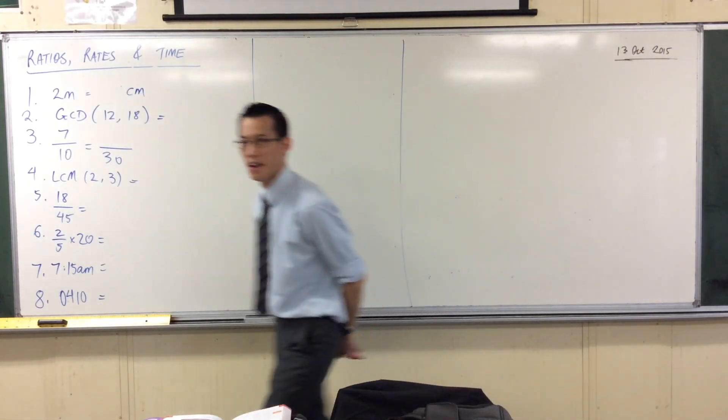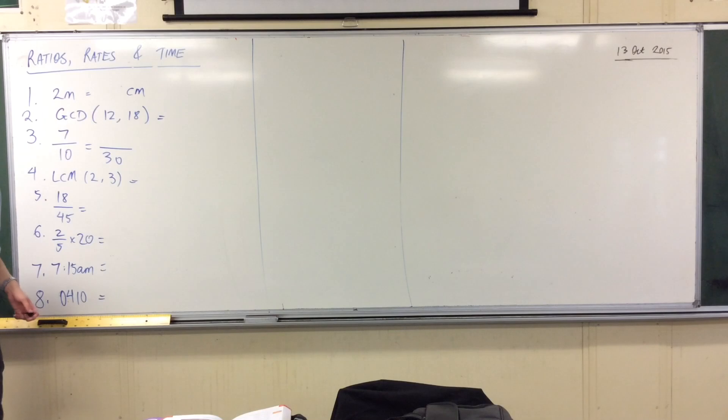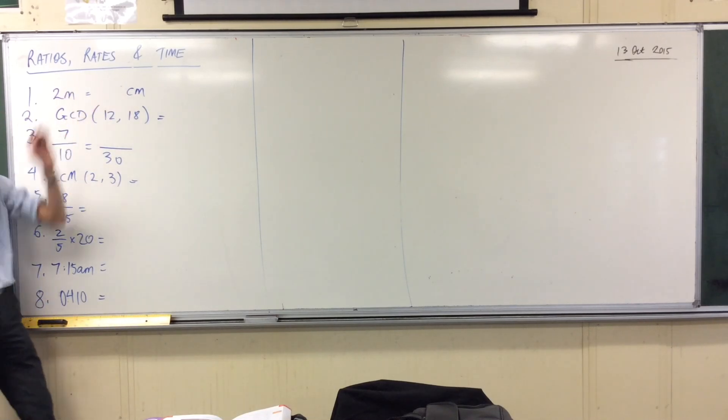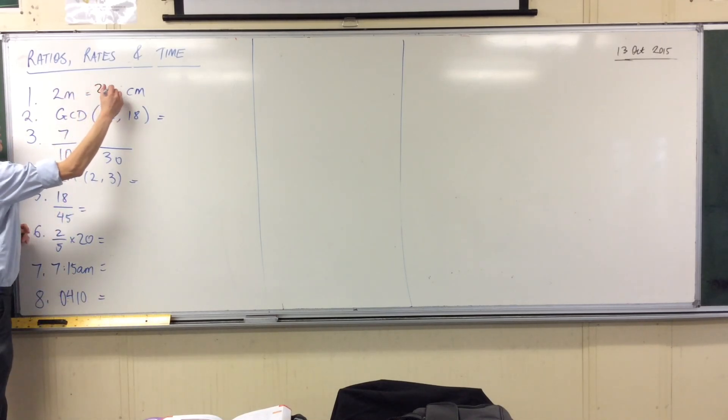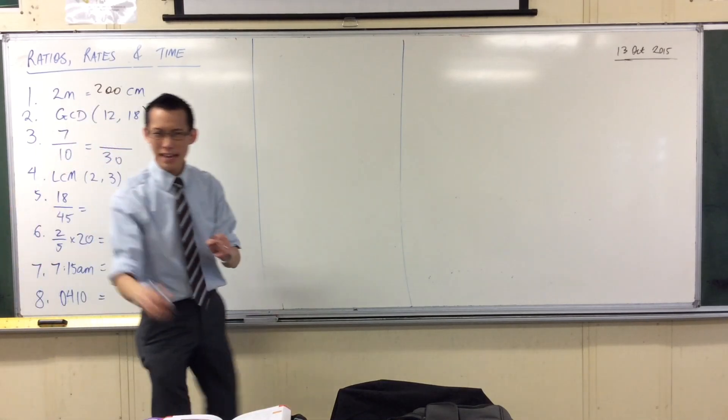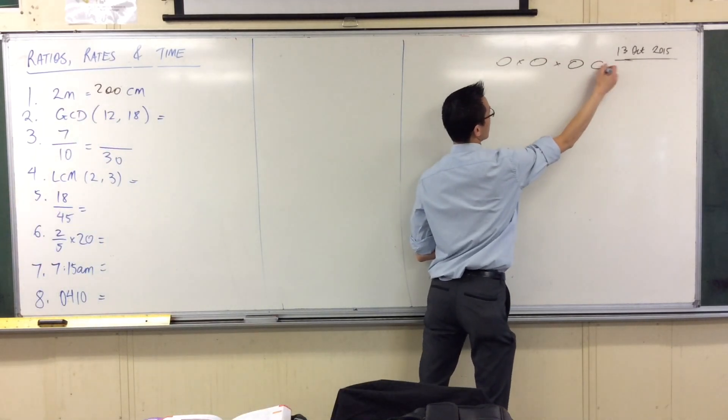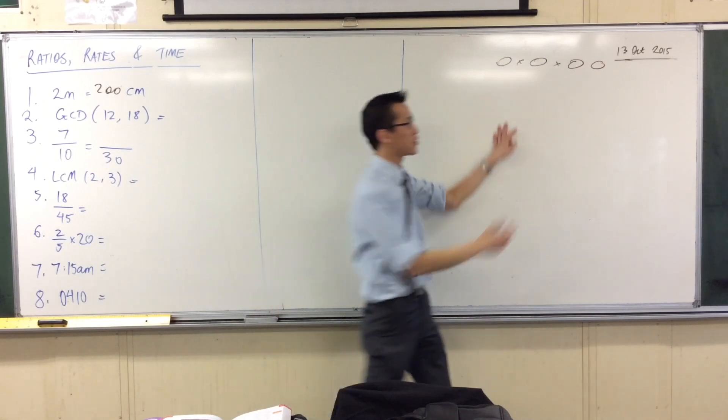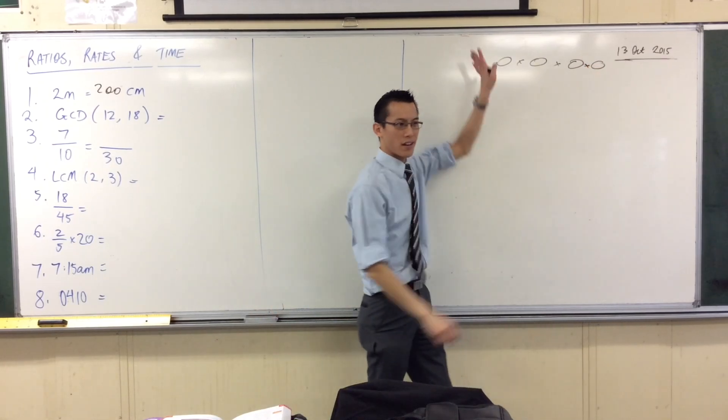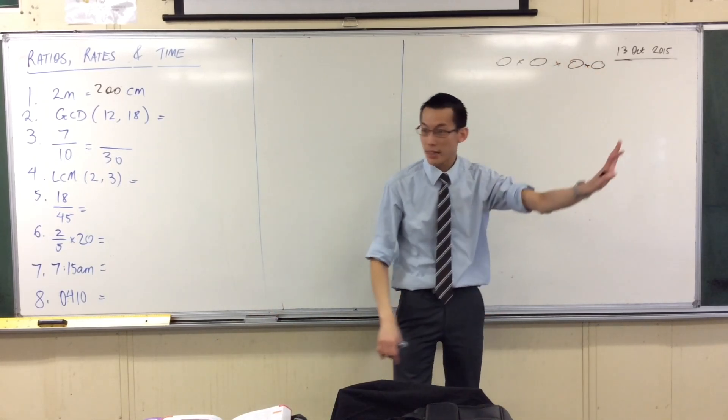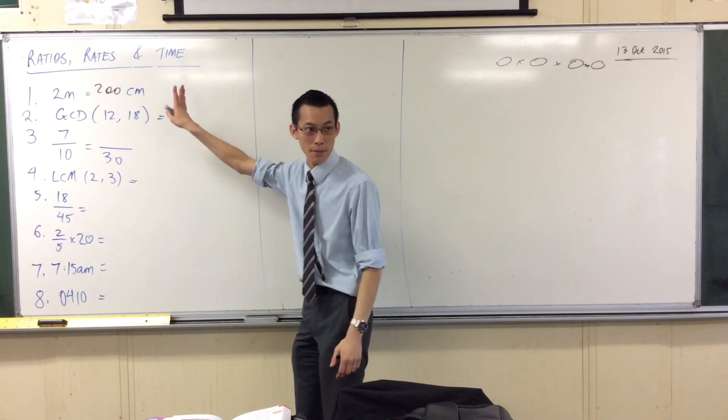So let's see, how are we going to go? Well, can you start me off with question one? Two meters, how many centimeters? 200. Fantastic, so we're going to multiply by 100. You might remember that metric diagram that shows you how to convert between kilometers, meters, centimeters, millimeters. So we're multiplying by 100, no big deal.